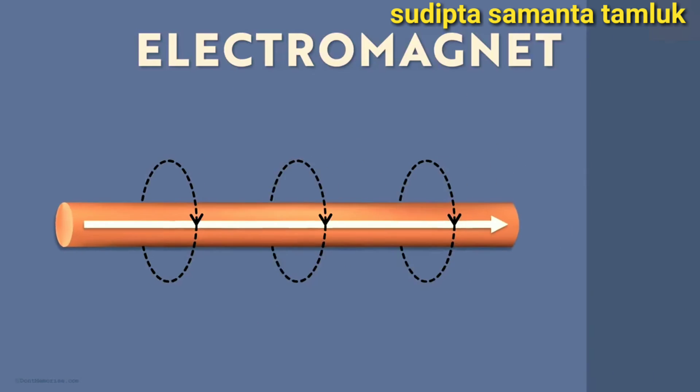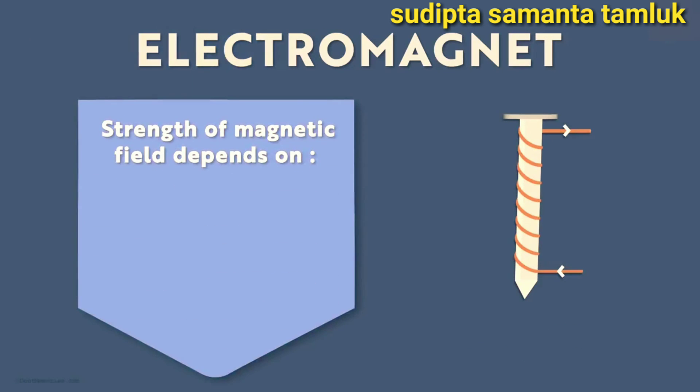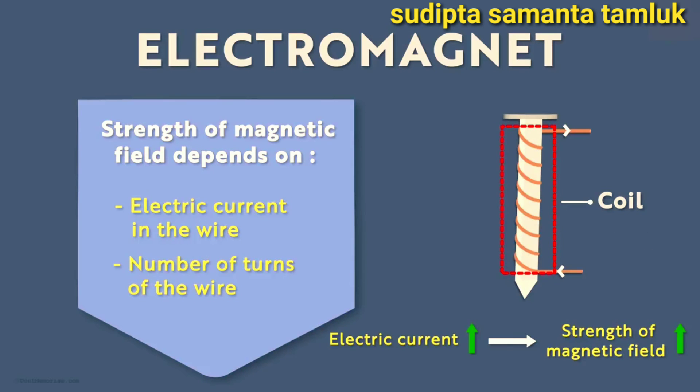However, we can make the magnet strong by wrapping the wire around a piece of iron such as an iron nail. Even if the current is the same in both cases, this one will result in a stronger magnetic field. Now there are some factors on which the strength of the electromagnet depends. The current flowing in the wire is one of them. If we increase the flow of the current in the wire, the strength of the magnetic field of this electromagnet will also increase. Another way to increase the strength of this magnetic field is by increasing the number of turns of the wire around the nail. More the number of turns, stronger the magnetic field will be.